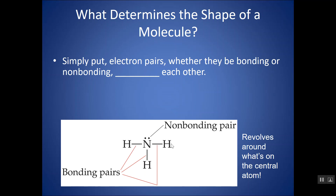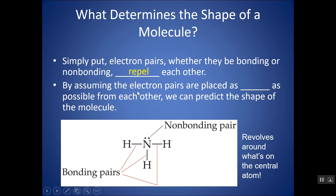But how do you know what the shape of the molecule is by looking at a structure? Simply put, electron pairs — whether they're bonding or non-bonding (lone pairs) — are going to repel each other. Electrons are negative, and negative charges repel each other. Assuming that electrons are going to repel each other, any type of electron pair is going to be placed as far as possible from each other, which allows us to predict the 3D shape of the molecule. This is all based around what's on the central atom.